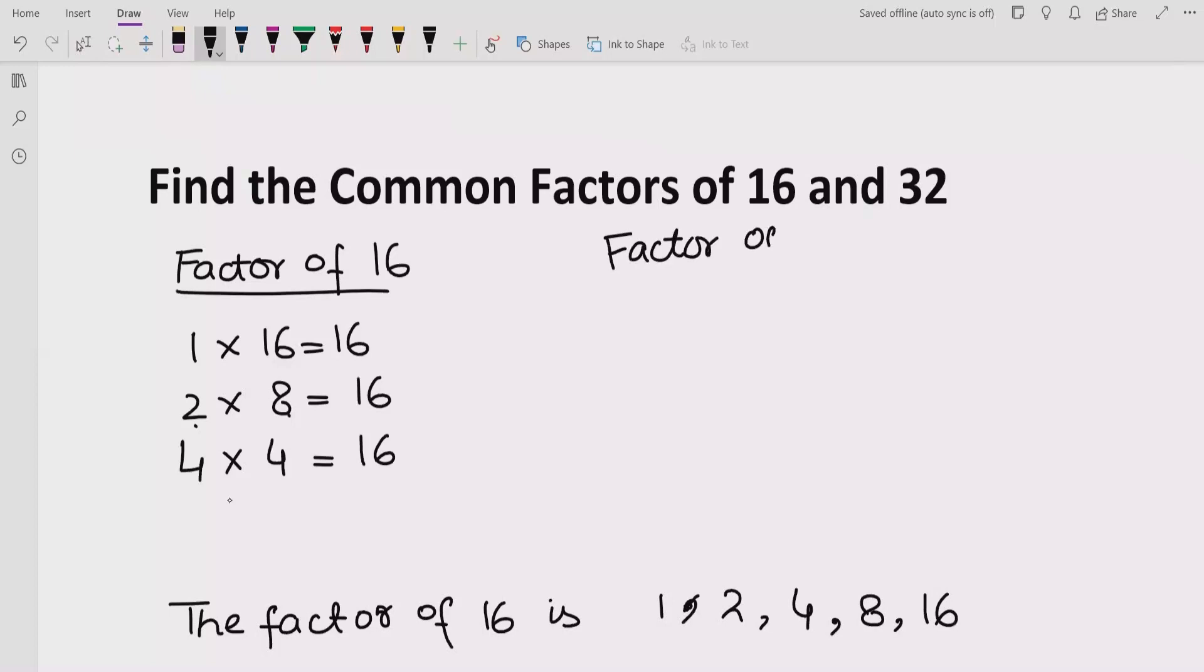32: 1 multiplied by 32, 2 multiplied by 16 is 32. Now we can multiply by 4. Now we cannot multiply 5, 6, and 7. So now 8 is here. So 8 multiplied by 4, 16 multiplied by 2, and 32 multiplied by 1.